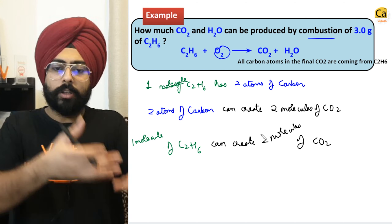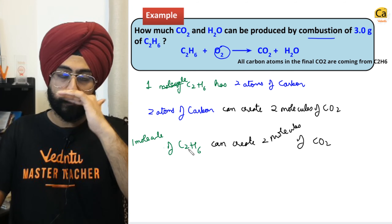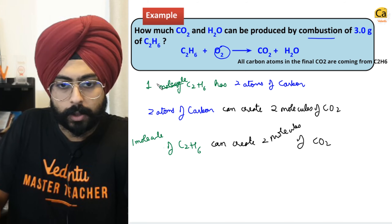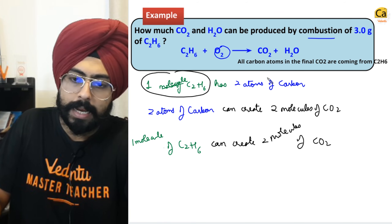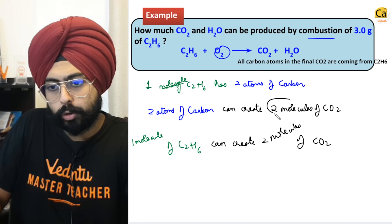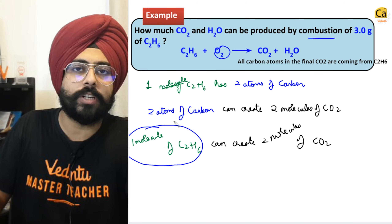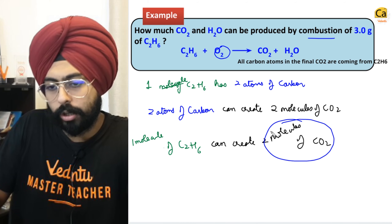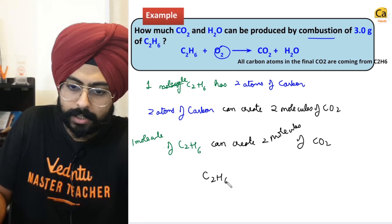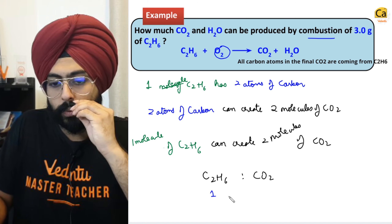Whatever you've done for molecules and atoms, you can do the same thing for moles. One molecule of C2H6 has two atoms of carbon; these two atoms of carbon can create two molecules of CO2. So one molecule of C2H6 can create two molecules of CO2. What is the ratio of C2H6 to CO2 in this entire conversion? The ratio is 1 to 2.